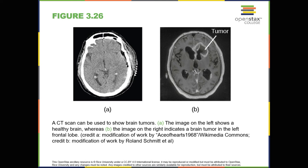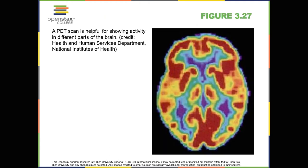The x-rays pass through tissues of different densities at different rates, allowing a computer to construct an overall image of the area of the body being scanned. A CT scan is often used to determine whether someone has a tumor or significant brain atrophy. Positron emission tomography, or PET scans, create pictures of the living active brain, as shown in figure 3.27. An individual receiving a PET scan drinks or is injected with a mildly radioactive substance called a tracer. Once in the bloodstream, the amount of tracer in any given region of the brain can be monitored. As brain areas become more active, more blood flows to that area.